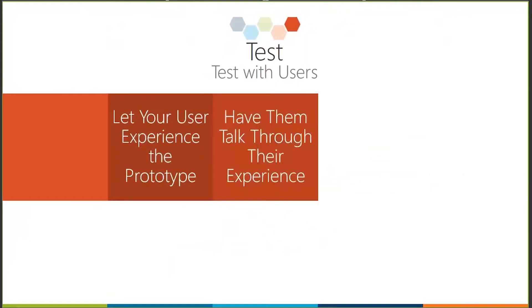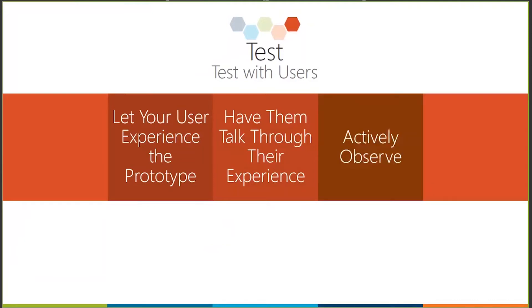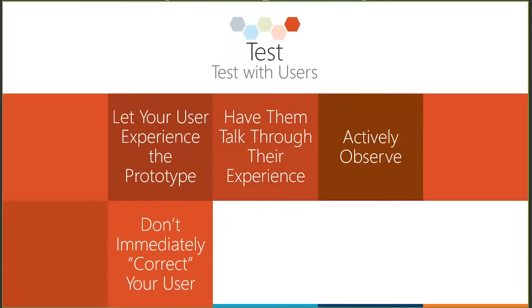Have the users talk through their experience while they're testing it so that you can hear what they're thinking and understand what they're experiencing as they go through it. Your job is to actively observe everything that's happening during the testing phase. Don't immediately correct the user if they're using it wrong or hitting the wrong button — that is how they're intuitively understanding how to use your product. Watch, observe, take notes, but don't correct them.